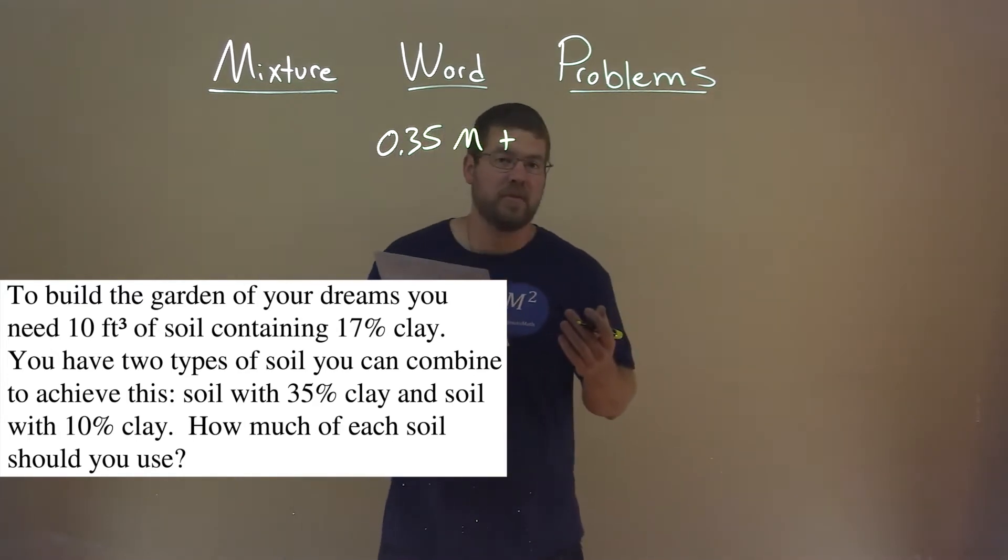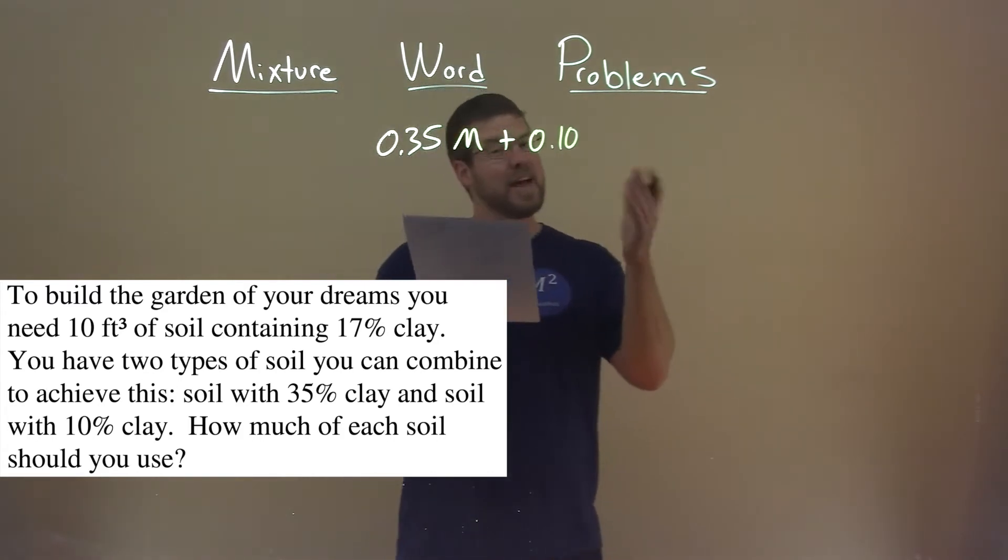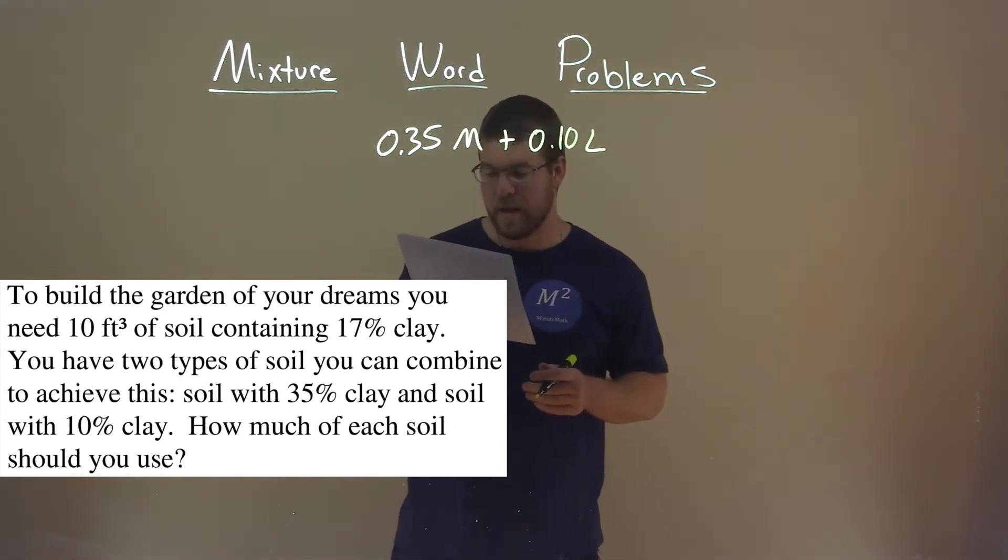The second mixture has 10% clay, so we call that as a decimal 0.10. And since this is a less mixture, I'm going to call it the variable L for the amount of that.